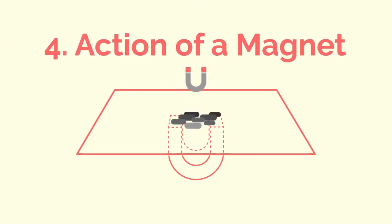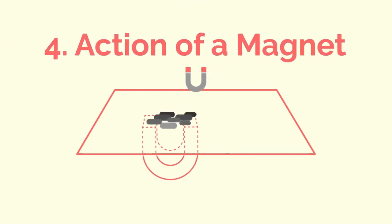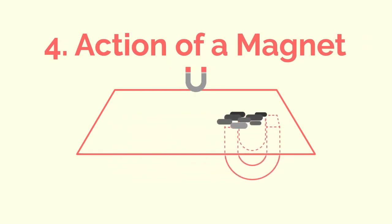If the iron is sprinkled onto a sheet of paper and a magnet is moved underneath the paper, you will see that iron filings follow the magnet as they are attracted to it.